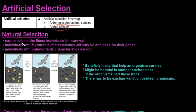So natural selection. Nature selects the fittest individuals for survival. Individuals with favorable characteristics will survive and pass on their genes. And then individuals with unfavorable characteristics will die out. So this is very similar to Darwin's theory of evolution.